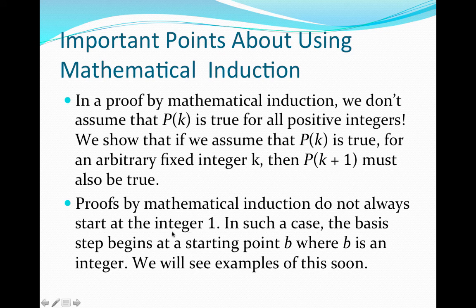Oftentimes we look at properties holding for all positive integers, so our base case starts at the first positive integer 1. However, in some cases a property may not hold for all positive integers — it may only hold starting from some point b. In that case, our basis case would start at the first positive integer b for which the property holds, and we apply the inductive step to show how to prove it for b+1, then b+2, and so on.